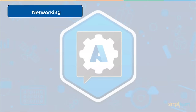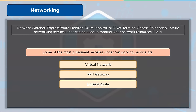Azure provides scalability, performance, high availability, and enterprise-grade security, with more than 165,000 miles of private fiber across 60-plus regions and 170-plus network POPs around the world. Customers get consistent low-latency experience across on-premises, multi-cloud, and edge locations. When you use Azure Networking's network as a service, you can concentrate on delivering your application logic. Azure network services for monitoring include Network Watcher, ExpressRoute Monitor, Azure Monitor, VNet, and Terminal Access Point.